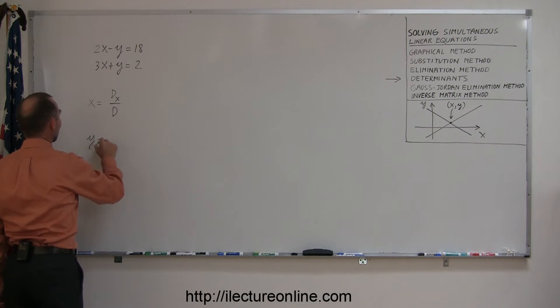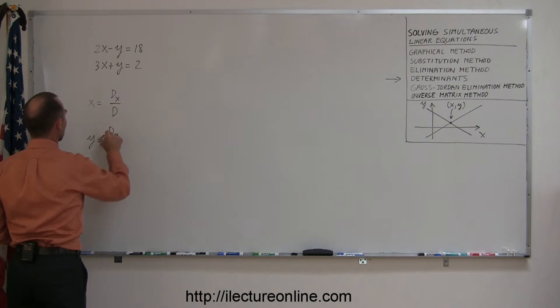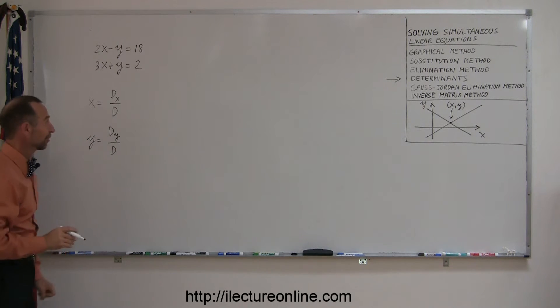To find the y-value of the point where the two lines cross, you take the d sub y and divided by the determinant d. Alright, let me show you before you scratch your head and go, what in the world is he talking about? Let me show you what these things are.